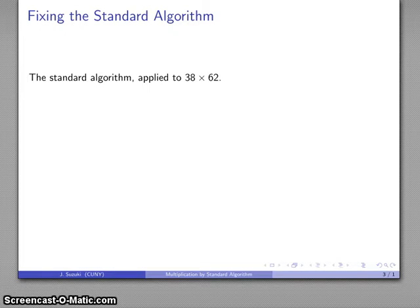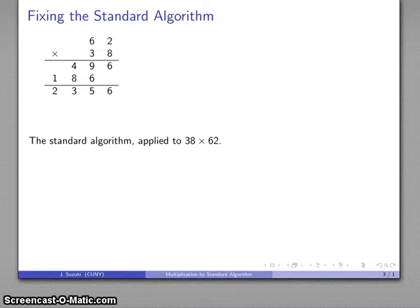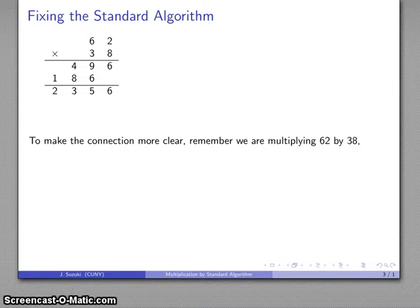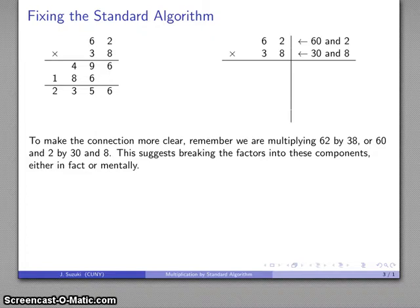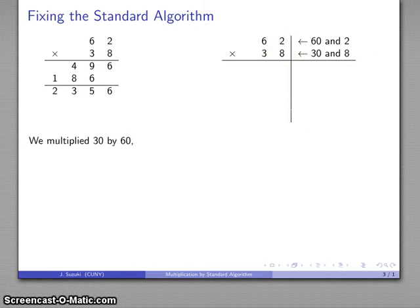So if I apply the standard algorithm to the product 38 times 62, I get this. And to make the connection more clear, again, the thing to remember is that we're multiplying 62 by 38 or 60 and 2 by 30 and 8. And what this suggests is maybe I want to break those factors into these components, either literally writing them out or, again, in the interest of efficiency, at the very least mentally breaking these apart into 60 and 2, 30 and 8.